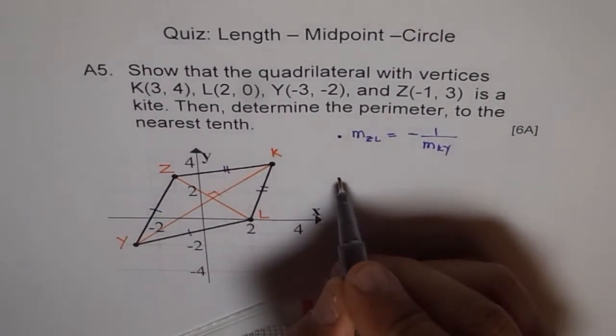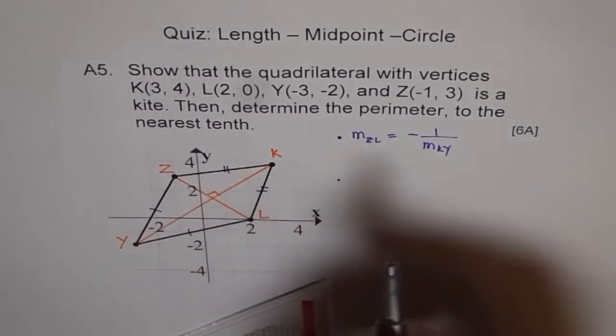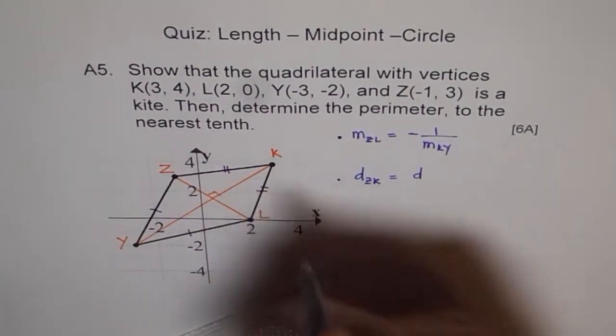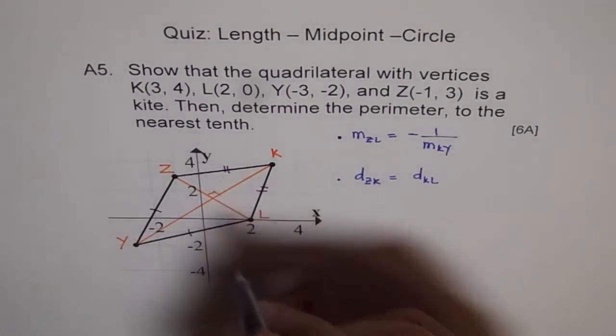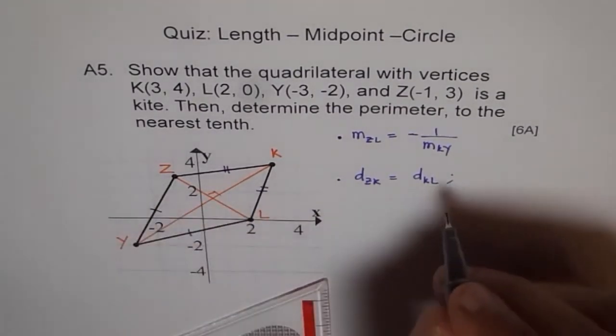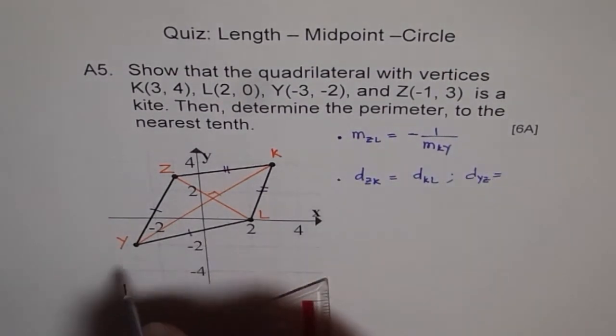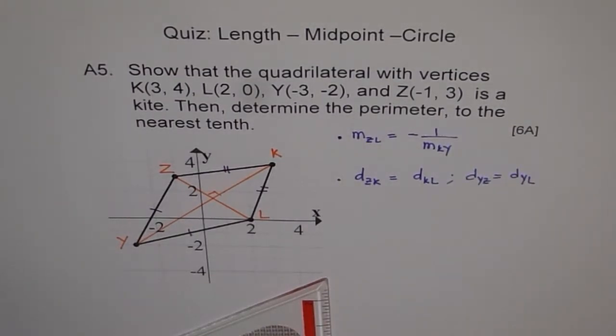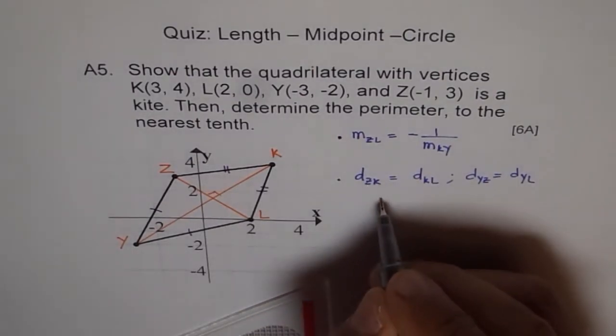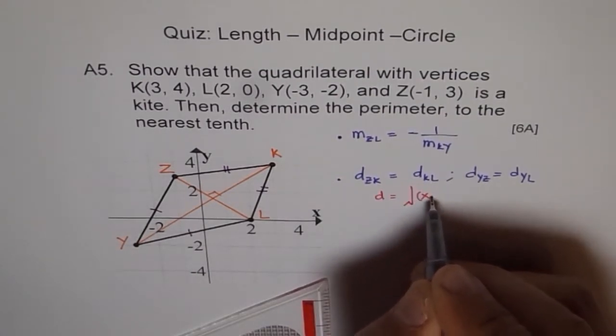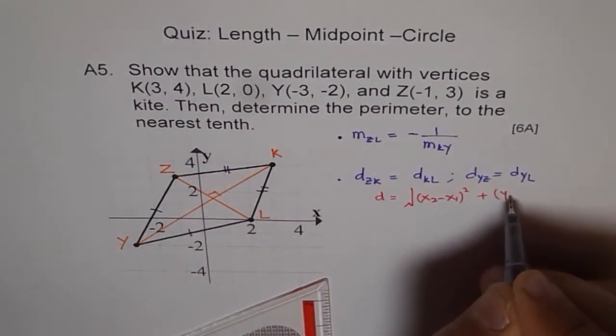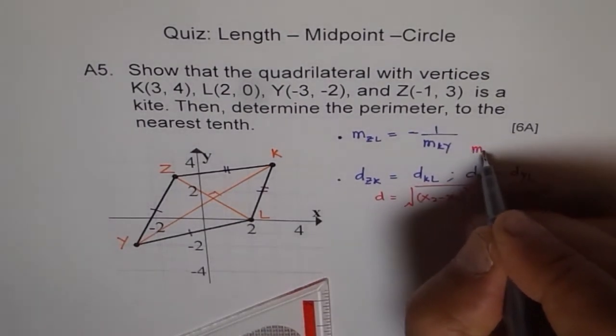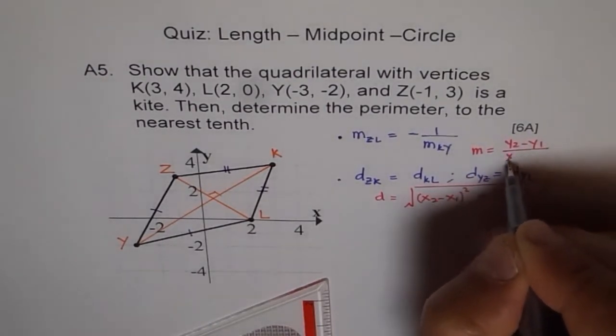Second, you need to prove the distances. Distance ZK should equal distance KL, and distance YZ should equal distance YL. For this, use the distance formula: √[(x2-x1)² + (y2-y1)²]. Remember, the slope formula is (y2-y1)/(x2-x1).